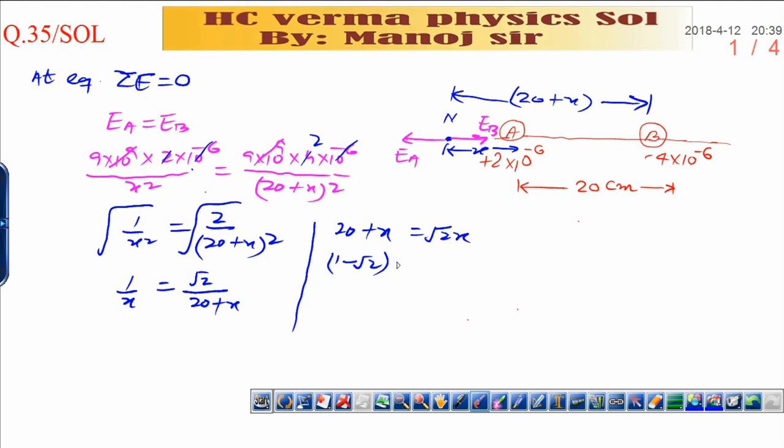Finally it will be (1 - √2)x is equal to -20. Now x is equal to 20/(√2 - 1). That will be 20/(1.414 - 1), which is equal to 20 divided by 0.414. Finally x will be approximately 48.3 cm.